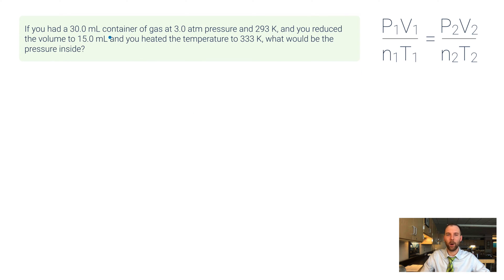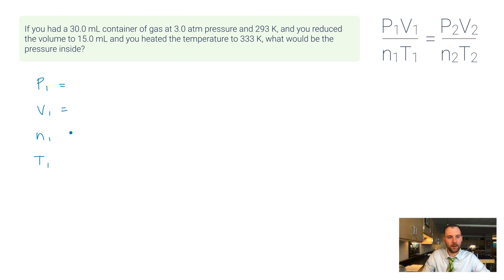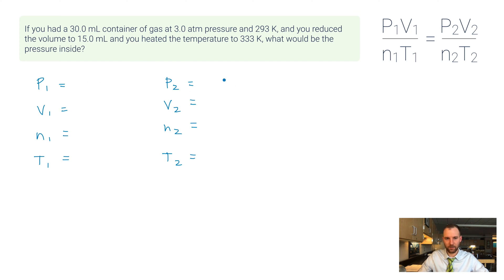Let me show you an example problem. It says: if you had a 30-milliliter container — pause there. There's going to be a ton of information in these problems, so I suggest you make a list of p1, v1, n1, and t1, and then p2, v2, n2, and t2. Keeping track of all this information means you can assign each number as a variable as you read, rather than keeping it all in your head.